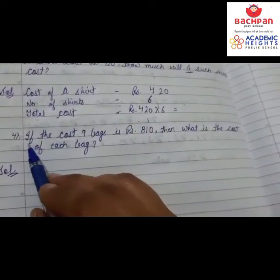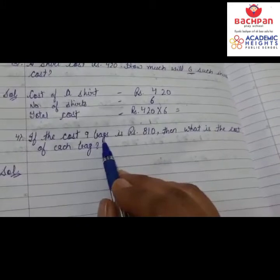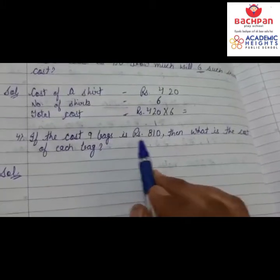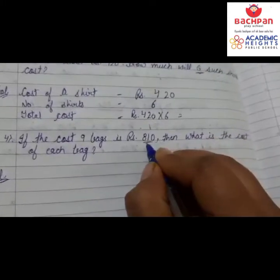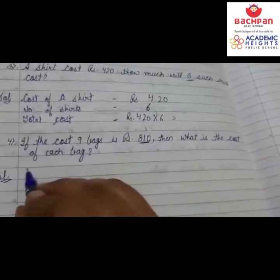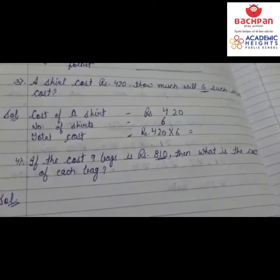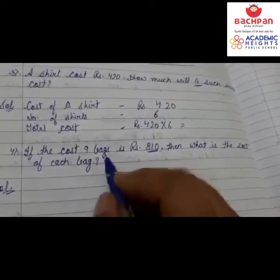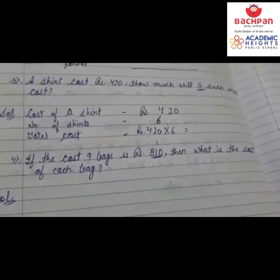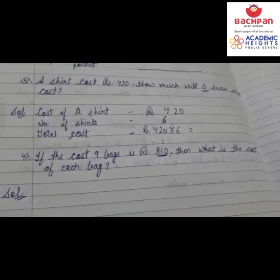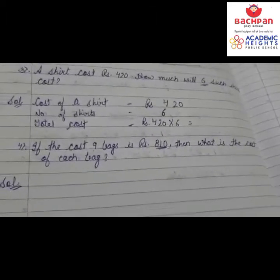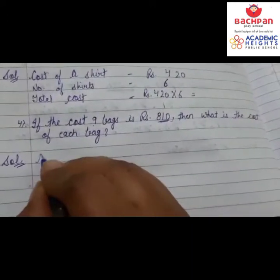Next question: The cost of nine bags is rupees 810. Means 810 rupees can buy nine bags. What is the cost of each bag? Now nine bags' value is given and we need to find the value of one bag. We are going from big to small — we know the value of many and need to find the value of one — so we do division.